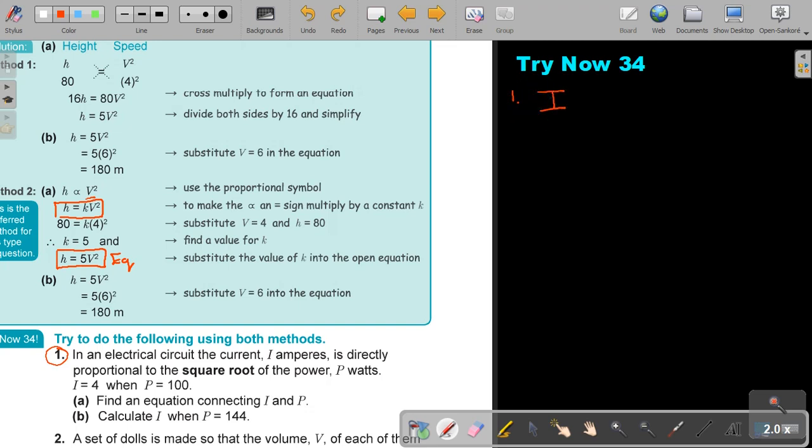Start with your first statement. So they say I, amperes, is proportional to the square root of the power. Now, if you do it like this, then basically, if I want to make it an equal sign, I just put in the K. Now I substitute the values. When I is 4, P is 100. If I simplify that, I get 4 equals K times 10. So divide 10. So therefore, K is equal to 0.4. And if I do that, I'm going to say, now, I is equal, put in K, 0.4. That's where I put it. And then P.